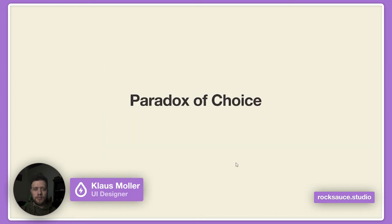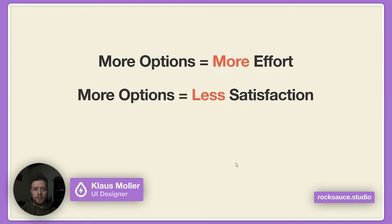This is what we call the paradox of choice. The paradox of choice indicates that the more options we have, the more effort we have to put in to make a decision. And at the same time, when you have more options, you end up being less satisfied because it becomes more difficult to feel that you took the right decision. It's more common to regret a decision when you have more options than when you have fewer options.